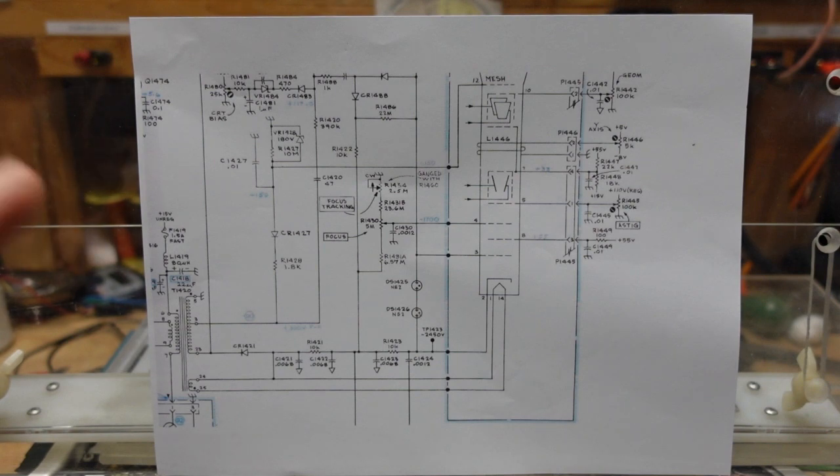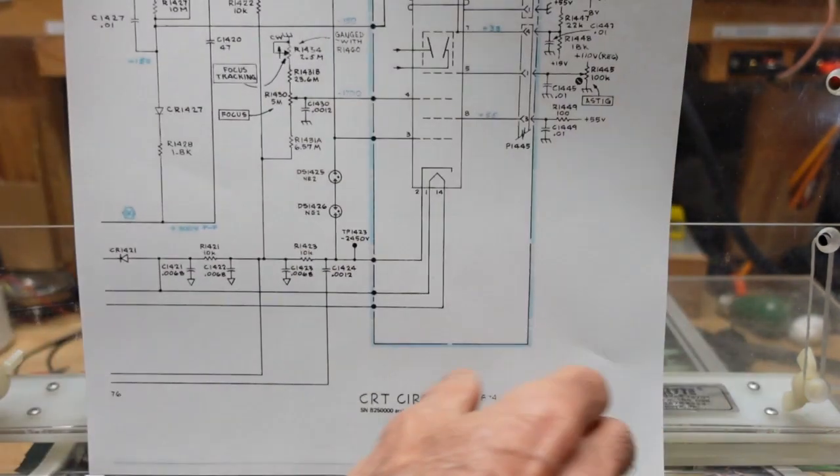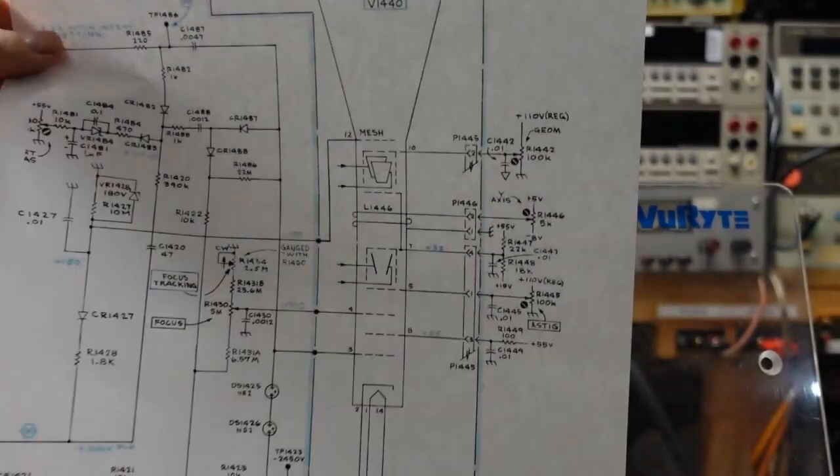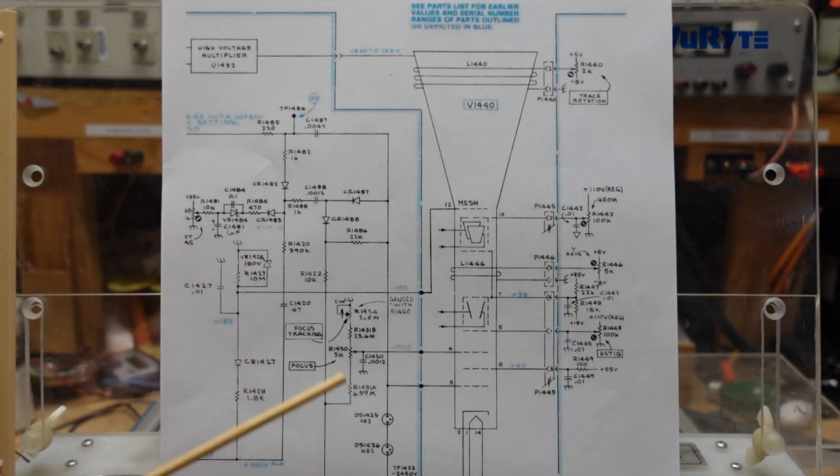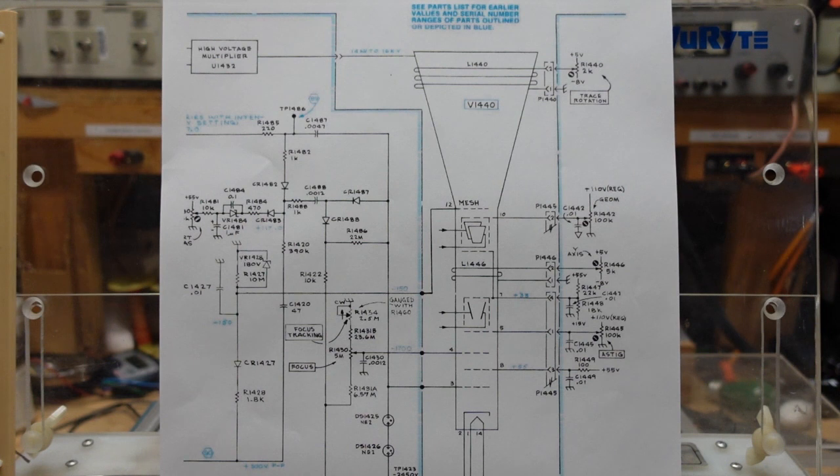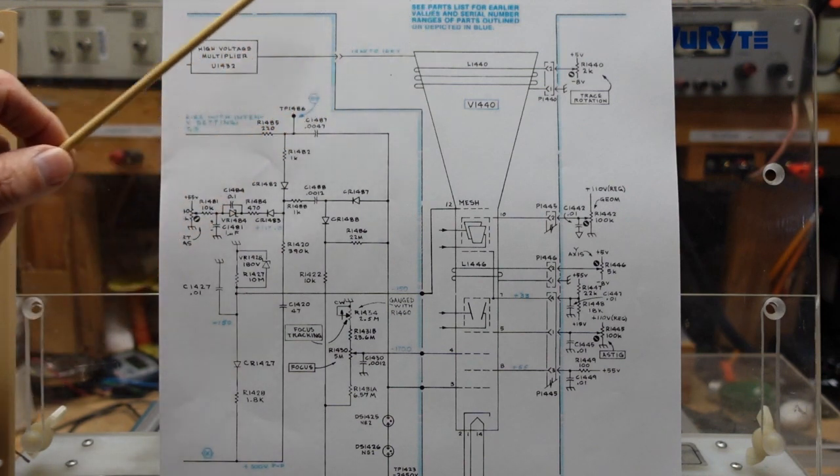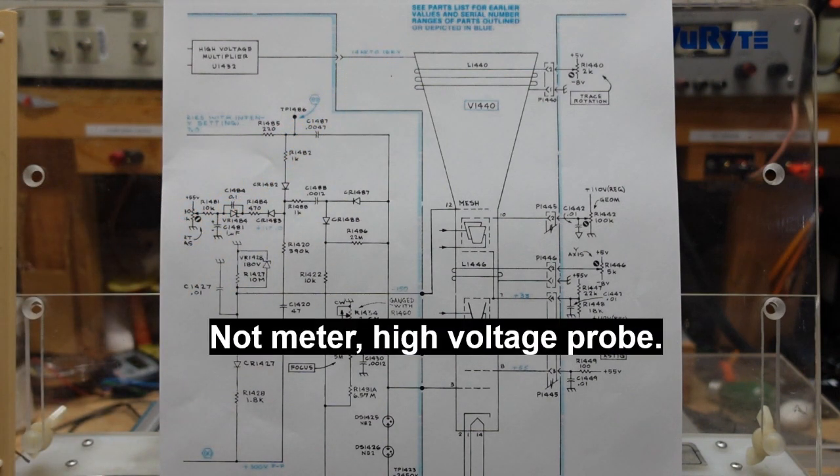Basically high voltage circuits and scopes and televisions are divided into two basic sections: high voltage and really high voltage. We have our negative 2450 down here at the bottom, and then we feed a high voltage multiplier. This is just a potted assembly containing diodes and capacitors, and it takes the pulse DC going in and it raises it from our negative 2450 up to 14 to 16 kilovolt. That's why we want a meter that goes up to at least 20.